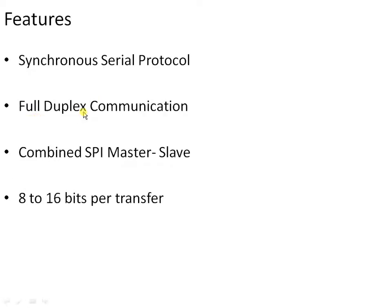The next feature is full duplex communication — simultaneous bidirectional data transfer can happen in full duplex. We have three kinds of modes: simplex, half duplex, and full duplex. Simplex is unidirectional communication. Half duplex is bidirectional, but simultaneous transmission cannot happen. In full duplex, both the transmitter and receiver can transmit or receive data at the same time.